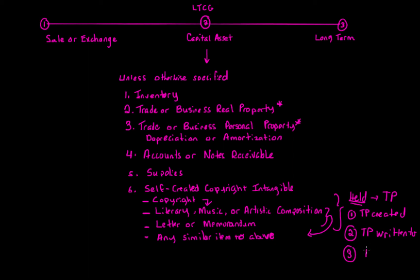The third scenario: if the taxpayer's adjusted basis is carried over from the taxpayer who created it or to whom it was written. A perfect example is a gift — when a gift occurs, the donee carries over the basis of the donor. If the basis was determined in the hands of the previous taxpayer that created it or it was written to, then the new taxpayer who received the gift will also not have a capital asset.